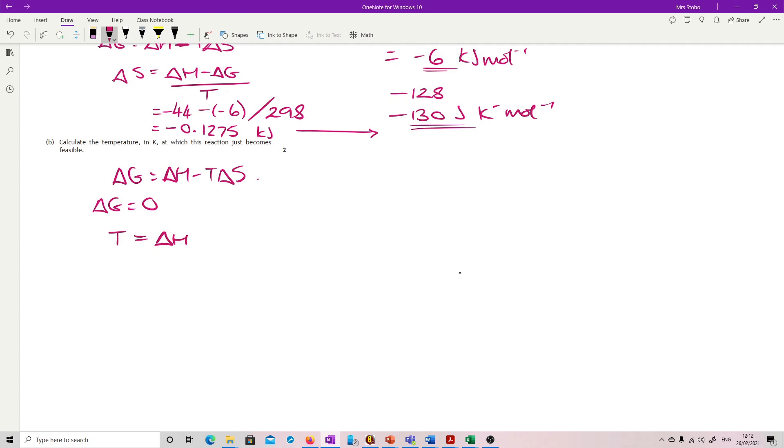So T is ΔH over ΔS. So we've got 44 divided by, now this is in kilojoules, so I need my S to be shifted back into kilojoules, but then I already had it as that. So you can either plot it in as 0.1275, or you can take it as 0.13.